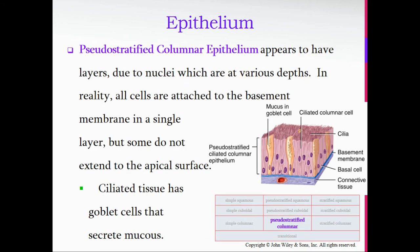Next is pseudostratified columnar epithelium — one of my favorite epithelia to say, especially when it contains cilia. When it is ciliated, it is called pseudostratified ciliated columnar epithelium, which rolls right off the tongue. That is absolutely the most fun epithelial tissue to say. Please pause the video and give yourself an opportunity to try it — it is pseudostratified ciliated columnar epithelium.